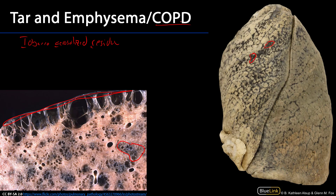They lose their elasticity and collapse onto the respiratory bronchioles and the terminal bronchioles that support those respiratory bronchioles, creating large air spaces. As a result, the total surface area available for respiration is greatly diminished, and an individual's ability to exchange gases across the respiratory membrane is also diminished.